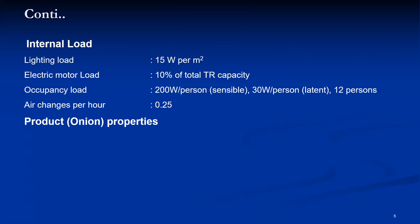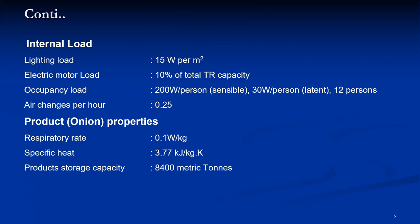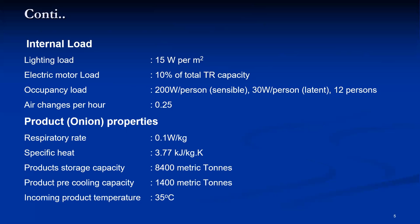The product in this case is onion. The product respiration rate is 0.1 Watt per kg. The specific heat of onion is also given. The storage capacity is 8,400 metric tons of onion. The pre-cooling capacity required is 1,400 metric tons. The incoming product temperature is considered as 35 degrees Celsius, and the cool-down time is 72 hours. This is the basic design data provided, with some data decided by the consultant, some from geographical considerations, and some taken from the design data book.